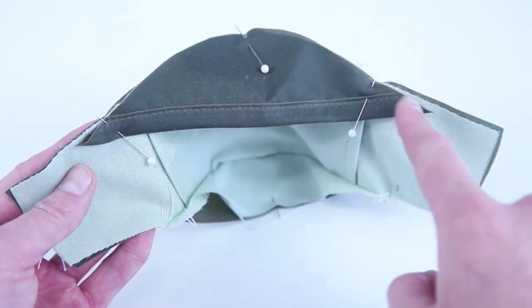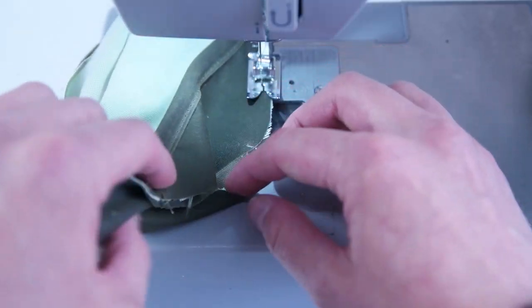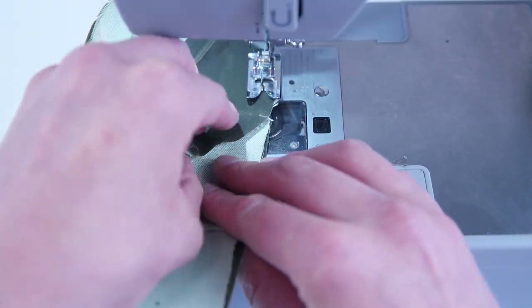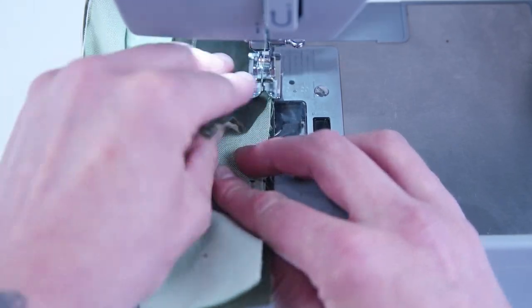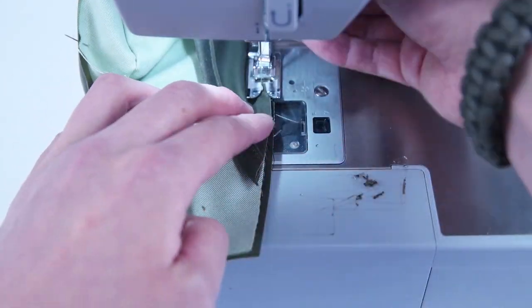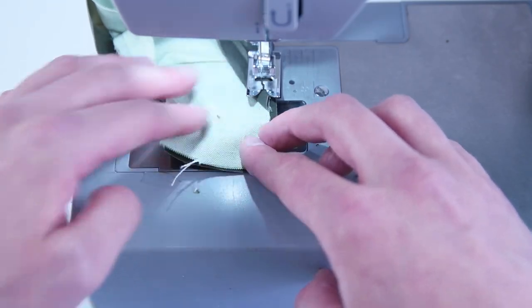And once you have it pinned down, we're going to go ahead and sew along that top edge as close as you can to the edge. And the reason we're sewing as close as we can to the outside edge is because we want our bias tape to cover that stitch.